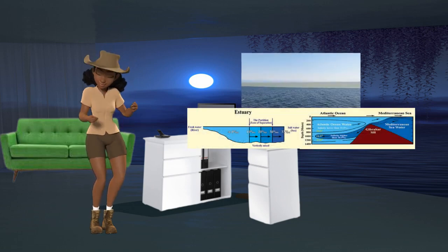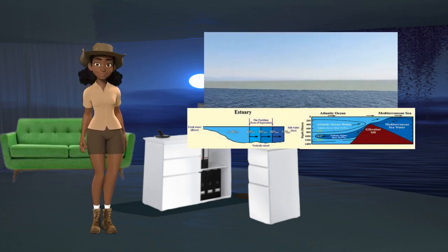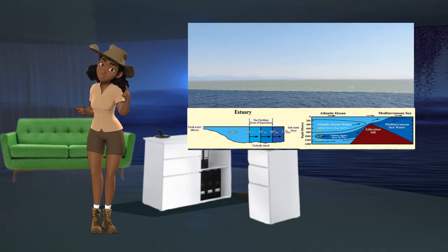For example, Mediterranean seawater is warm, saline, and less dense compared to Atlantic Ocean water.